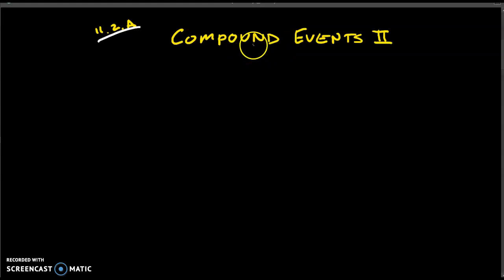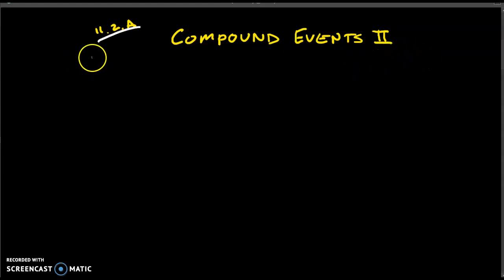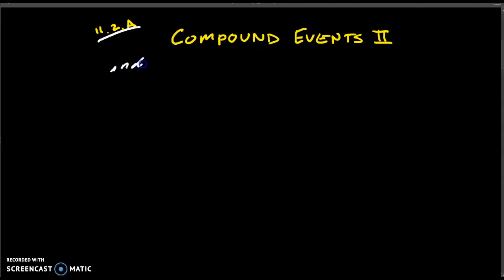Compound events. We've talked about compound events just a little bit before, and now we're going to look at one more type of compound event. Up until this point, we have talked about two things: something called independent and something called dependent.